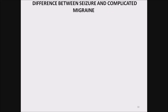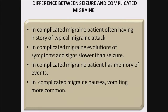Difference between seizure and complicated migraine: in complicated migraine, the patient has a history of typical migraine attacks with headache, photophobia, and phonophobia. In complicated migraine, evolution of symptoms is slower than in seizure. In complicated migraine, the patient has memory of the event, while in seizure the patient has no memory of the event. In complicated migraine, nausea and vomiting are more common.